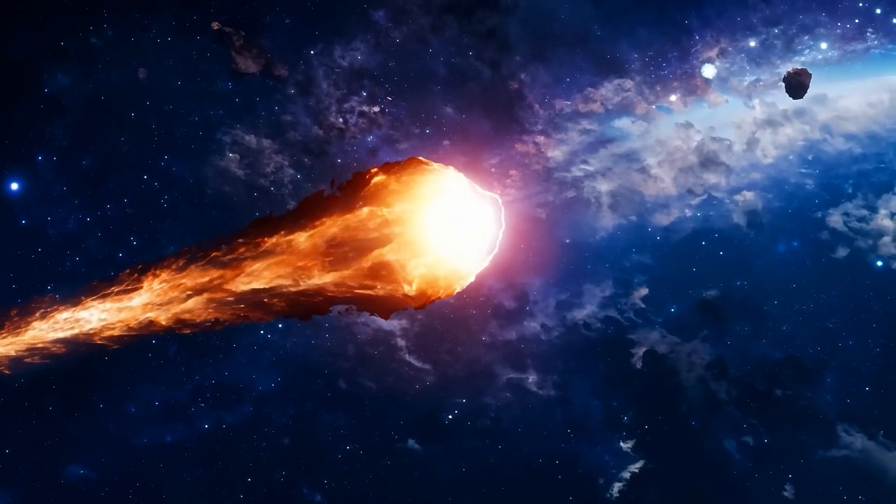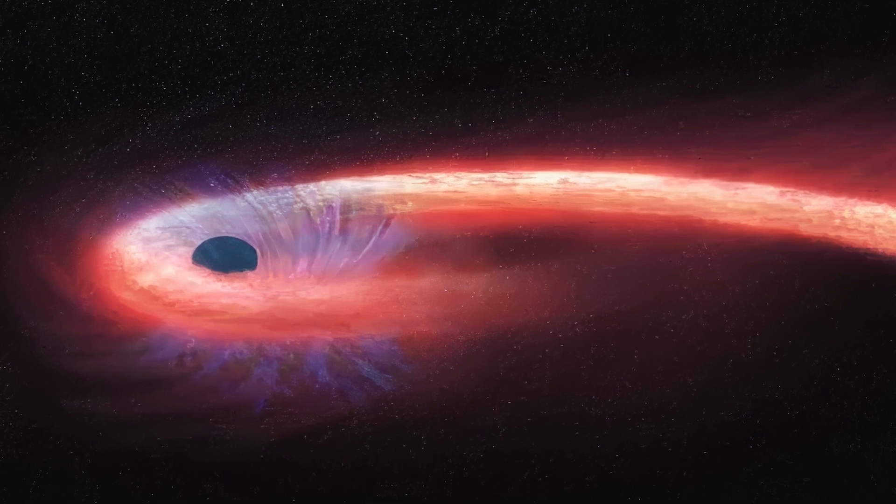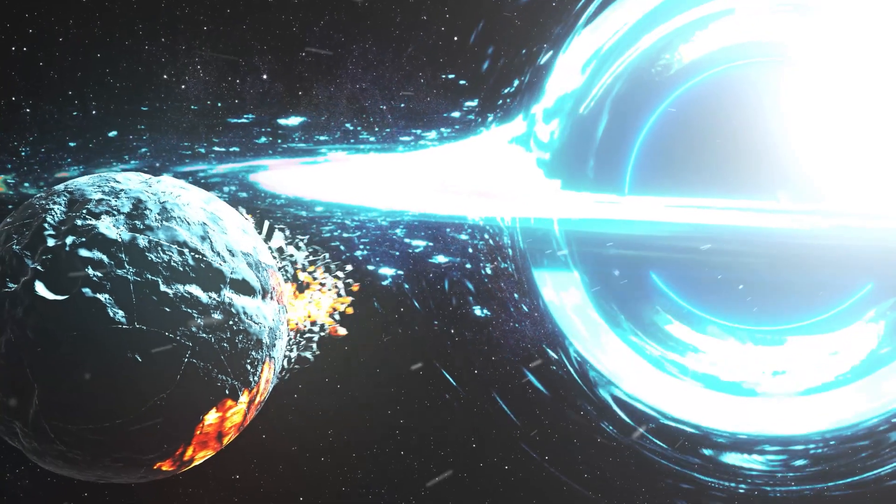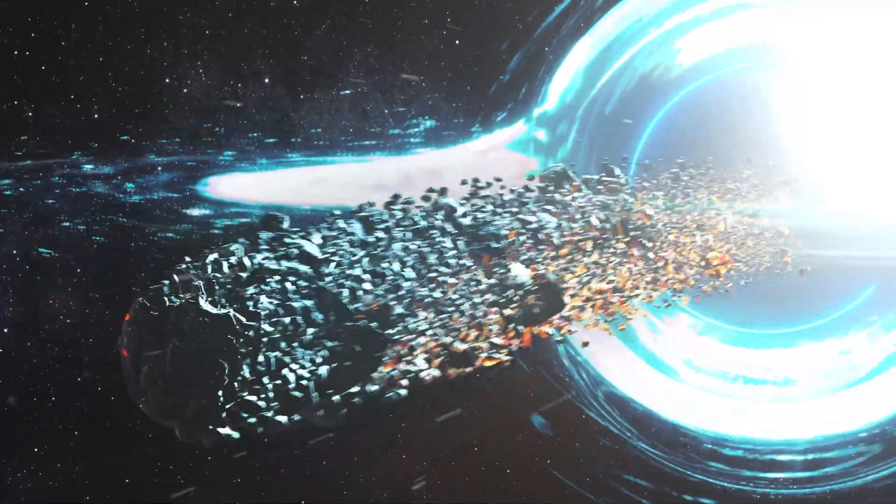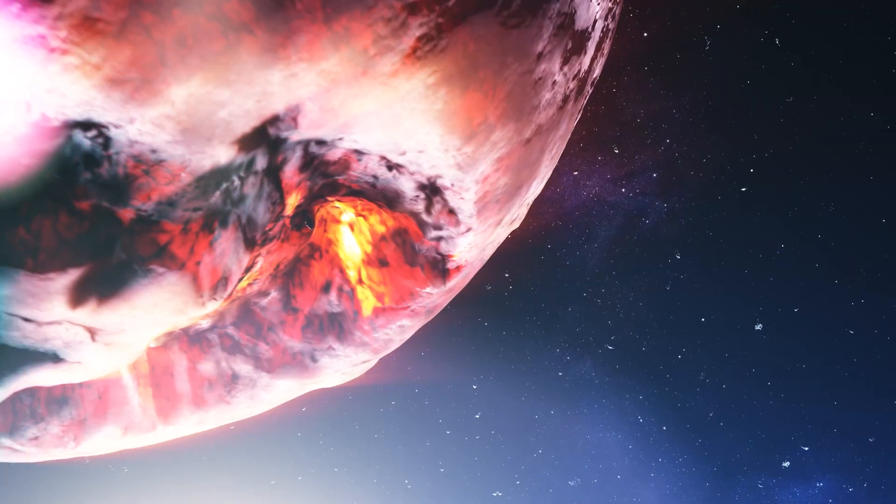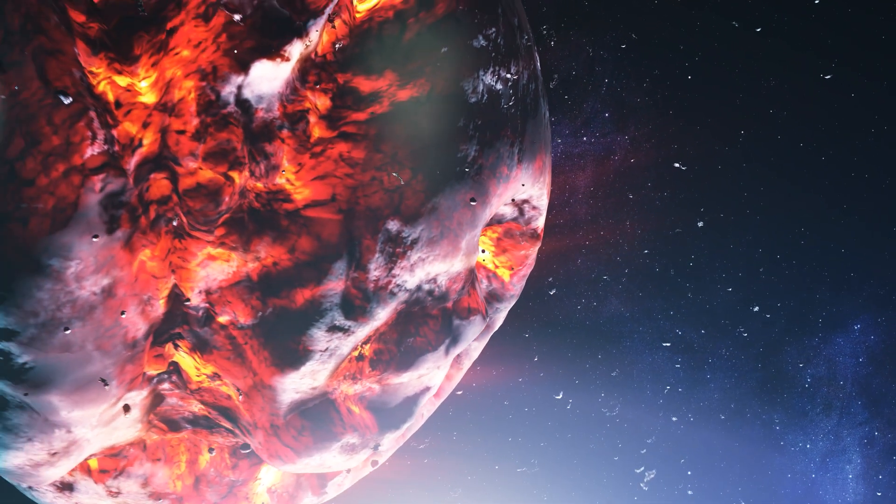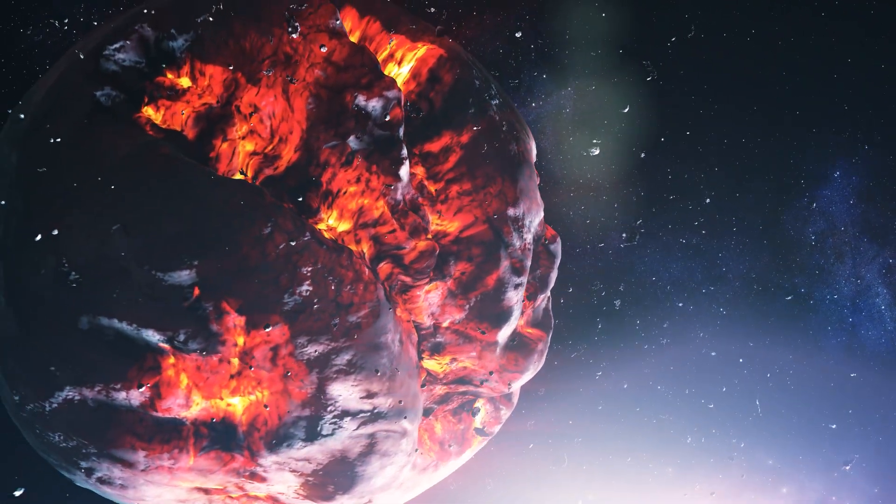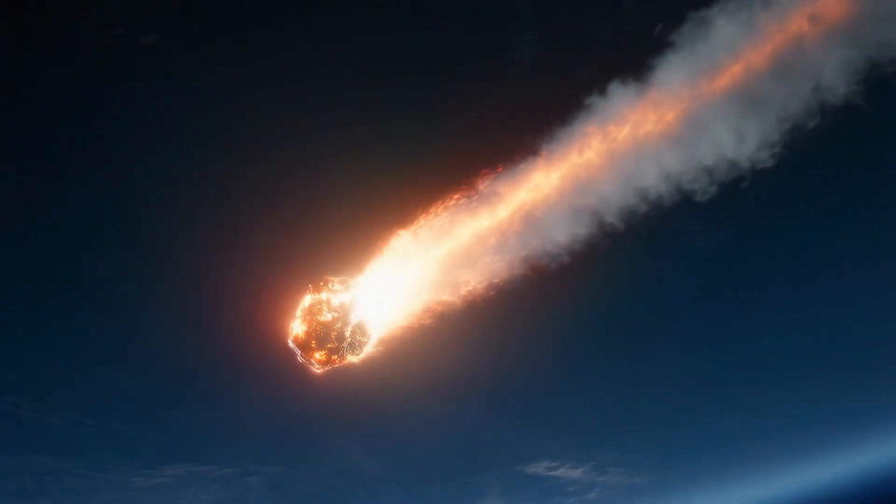So what could cause something this powerful? At first, the leading theory was what's known as a tidal disruption event, where a star gets too close to a black hole and is ripped apart by its gravity. We've seen those before, but ENTs didn't behave the same way. They were too bright, too long, and too chaotic. Some researchers proposed that we might be witnessing multiple massive stars being consumed one after the other, perhaps in a star cluster falling into the galactic center.